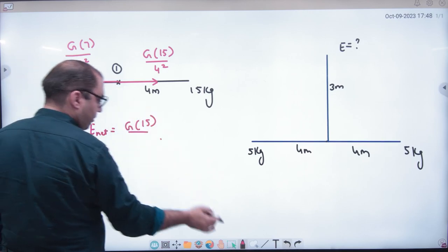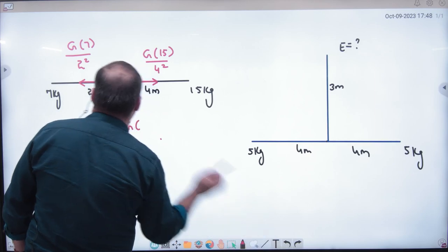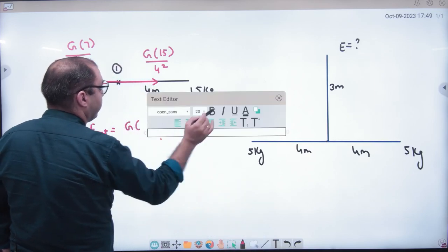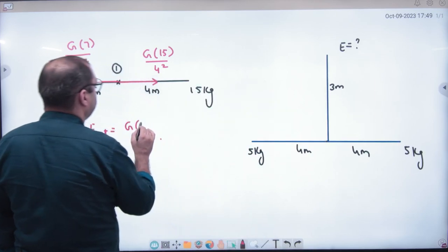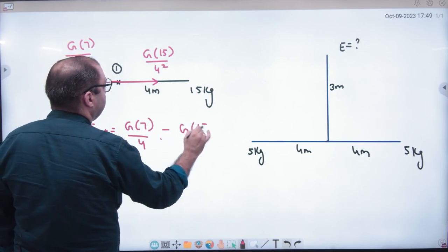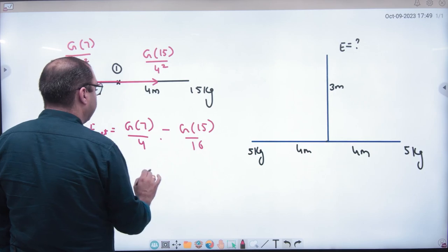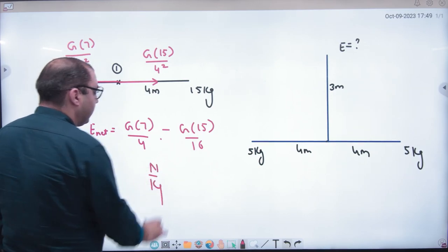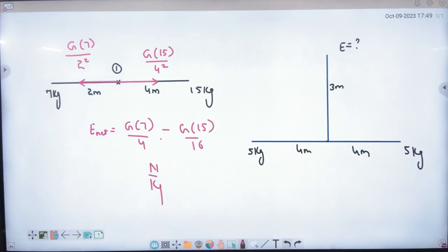This is big because this is 7 by 4. So with the big value what will I do, minus. So what will it be? Newton per kg, force upon mass. Is this step clear here? I don't have to solve. I will give the numerical to solve it and try to solve. Your answers, I understand the method.